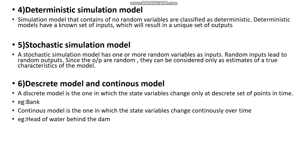The fourth kind of model is called deterministic simulation model. A simulation model that consists of no random variables is classified as deterministic. What that means is the entire model and the variables present in it are fixed — so when you have a fixed set of inputs, the result will obviously be a unique set of outputs.